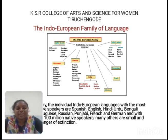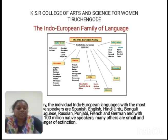The earliest period of English is the Anglo-Saxon period, which is also referred to as Old English. The Old English period is from 450 to 1100 AD. That is the period of Old English.